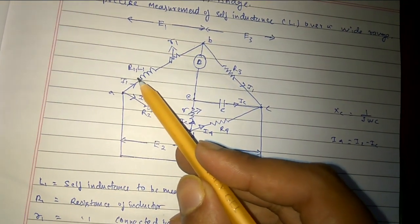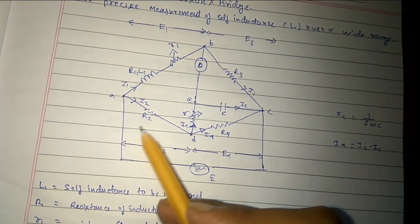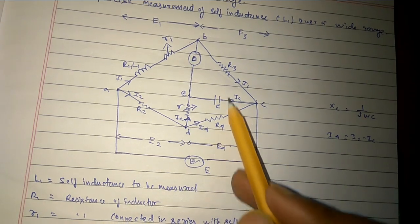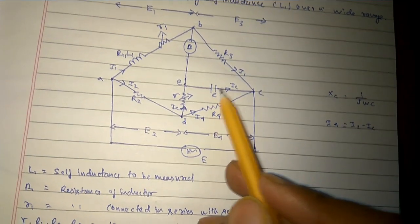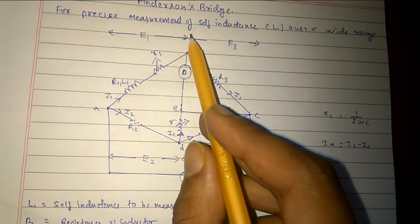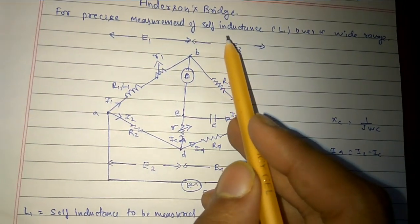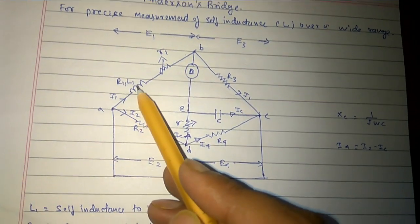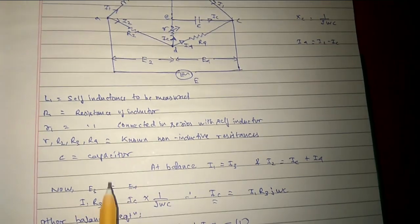Let me explain the diagram once again. This is the inductance and resistance in series. These others are non-inductive resistances. This is the capacitor. What we basically need to find is the precise measurement of the self-inductance L1.